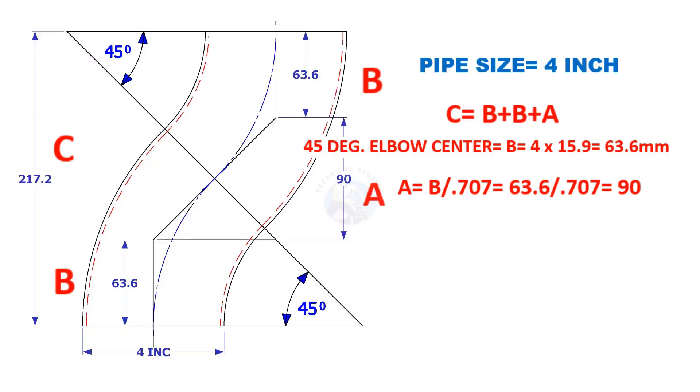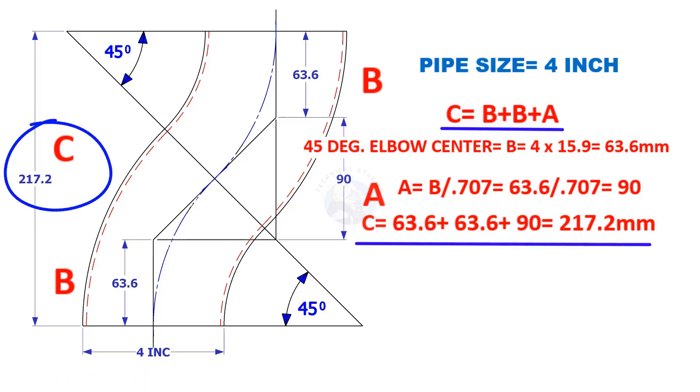The distance of A is B divided by 0.707, which is 90 millimeters. Now B plus B plus A is 217.2 millimeters.